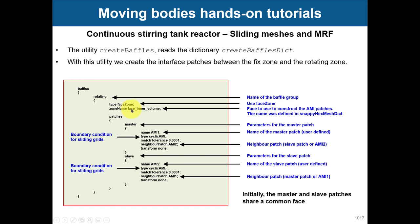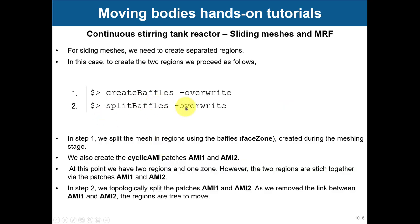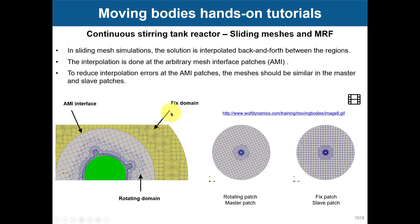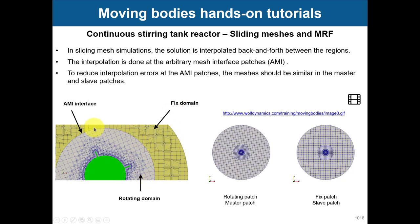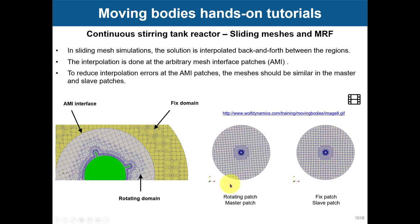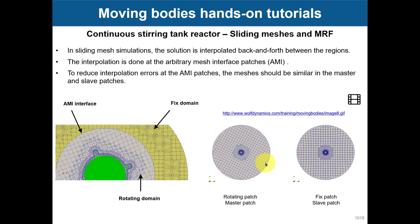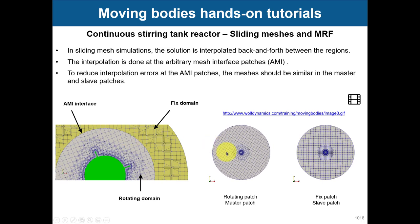These are the inputs of the createBaffles dictionary. The face zone needs to exist — usually created at meshing time or using topoSet. You select this face zone and apply the name. This is the standard way to create cyclic AMI. Then with splitBaffles you topologically split it. What is happening is: you have a fixed domain, a rotating domain, and an AMI interface. The fixed domain has a fixed face and the rotating domain has a moving face. You are interpolating the solution between the two patches, so some information is lost — it is important that the two meshes have roughly the same cell size at the interface, otherwise you introduce numerical diffusion.